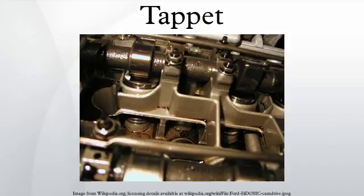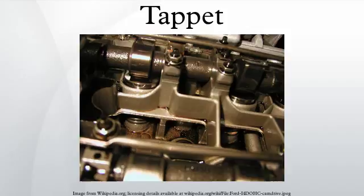Shims were made in a range of standard thicknesses and a mechanic would swap them to change the tappet gap. The engine would first be assembled with a default shim of known thickness, then the gap measured. A set of different shims would then be installed, each one chosen according to the change needed from the measured gap to the ideal gap. The gaps would then be measured again, in case of mistakes and also in case the cam position had shifted slightly.